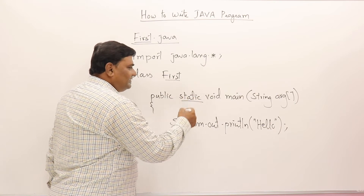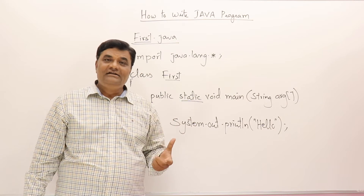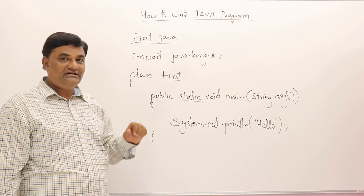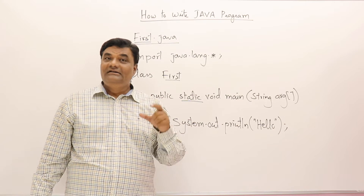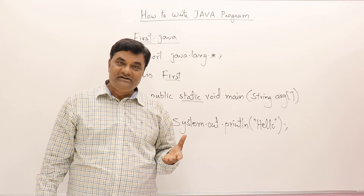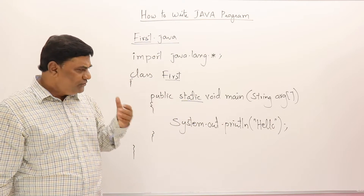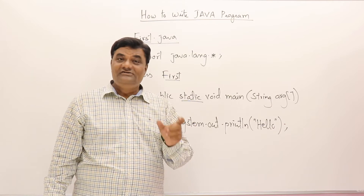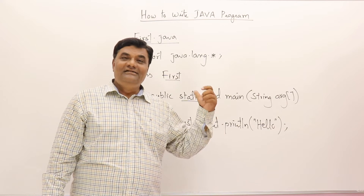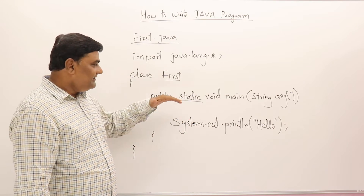Why is it static? It is static so that you can call this method without creating an object of the class. The member functions of a class can normally be called only after creating an object, but static members don't require an object. JVM will call the main method directly without creating an object - that is why we made it static.